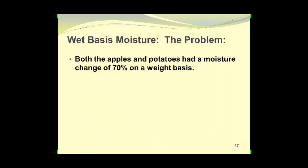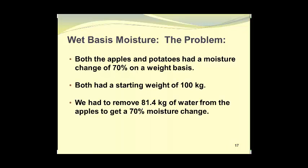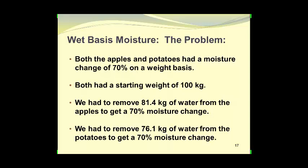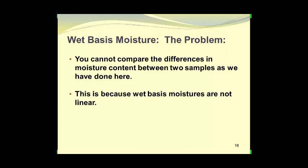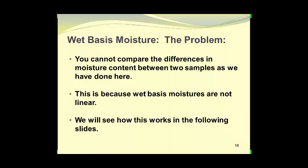Both the apples and potatoes had a moisture change of 70% on a wet basis and both had a starting weight of 100 kilograms. Yet we had to remove 81.4 kilograms of water from the apples, but only 76.1 kilograms from the potatoes for the same 70% moisture change. You cannot compare differences in moisture content between two samples this way, because wet basis moistures are not linear.